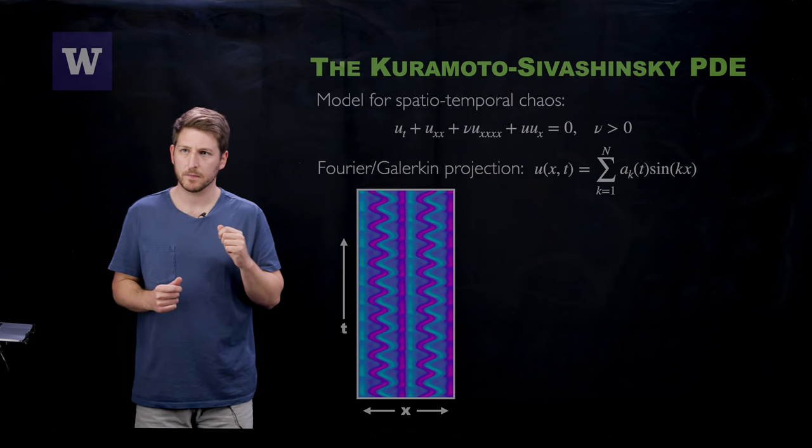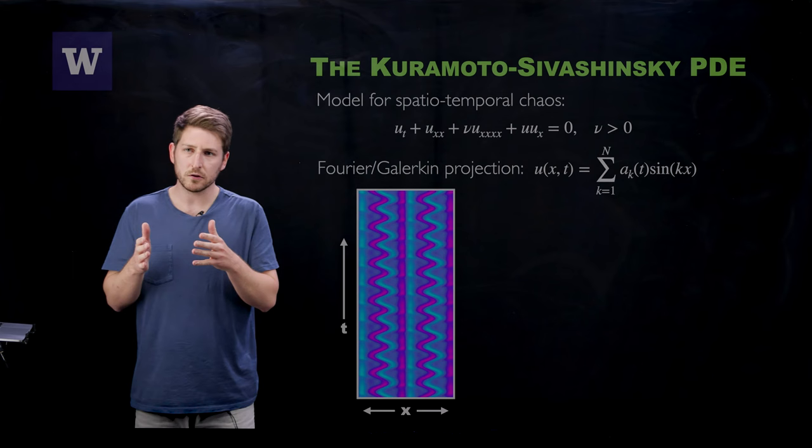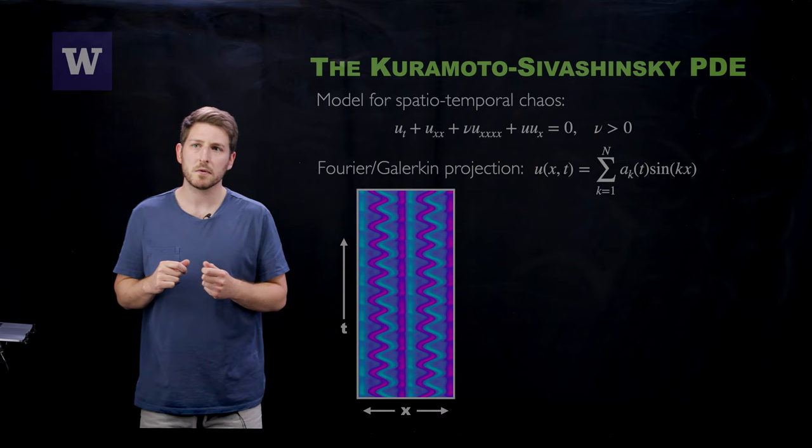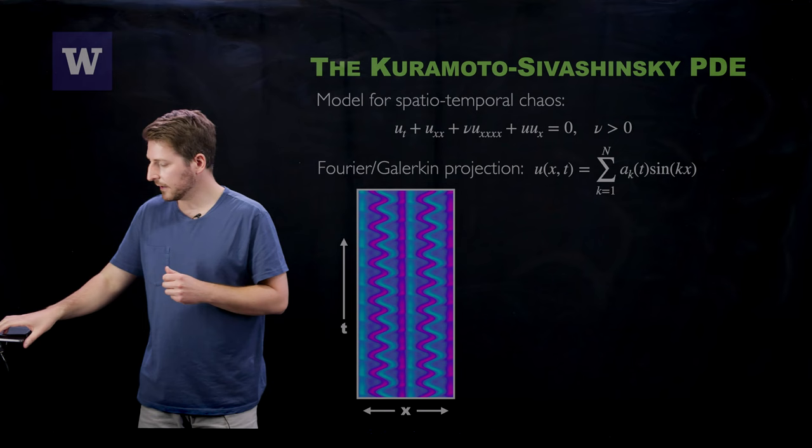And the traditional method by which we analyze this system is using a Fourier or a Galerkin projection. That is, we are going to expand the PDE solution u of x and t in terms of the odd Fourier modes, sine of kt, and write down a large coupled nonlinear dynamical system for those Fourier coefficients a_k of t.